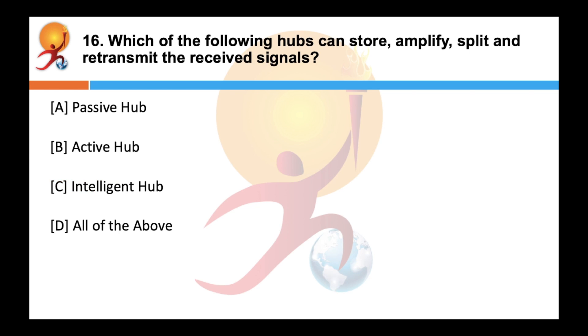Which of the following hubs can store, amplify, split and retransmit the received signal? Correct answer is an active hub. So it can store, amplify, split and retransmit the received signal. It requires additional electronic circuit for performing different functions.